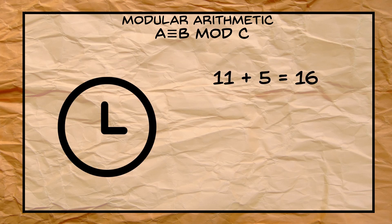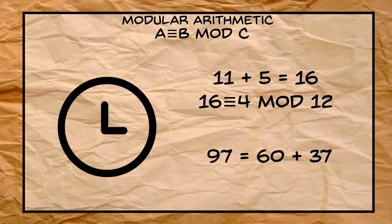We say that 5 hours after 11, it is 4 o'clock, not 16 o'clock, and similarly we say that 97 minutes is 1 hour and 37 minutes. This is modular arithmetic, modulo 12 and 60 respectively.